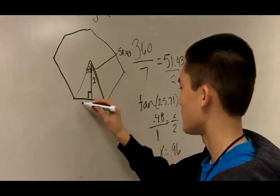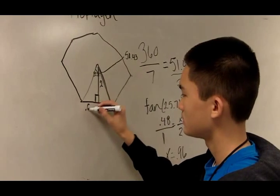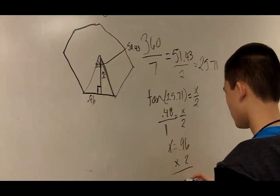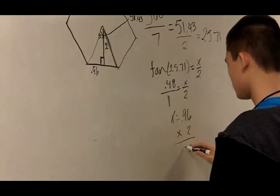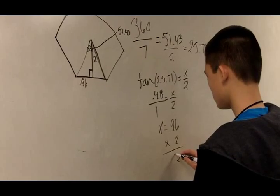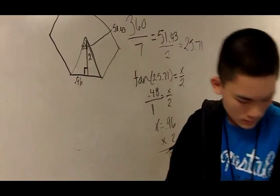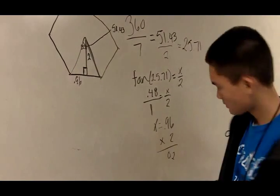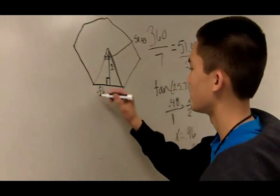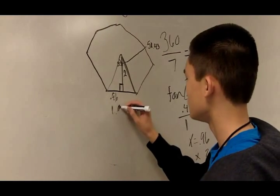And half of this side is 0.96. So you multiply it by 2. And one side will equal 1.92.